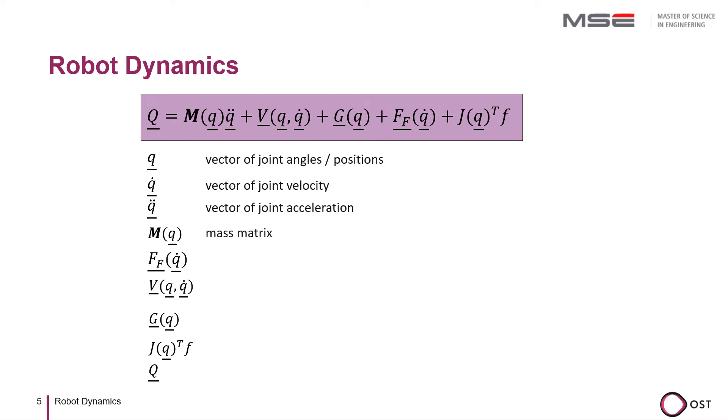The mass matrix represents all masses and moments of inertia of the robot that depends on the generalized robot coordinates. For example, the inertia of a robot arm about the z axis depends on whether the arm is extended or retracted. Multiplying the mass matrix by the acceleration vector Q dot dot gives the acceleration force in generalized robot coordinates according to Newton's law.